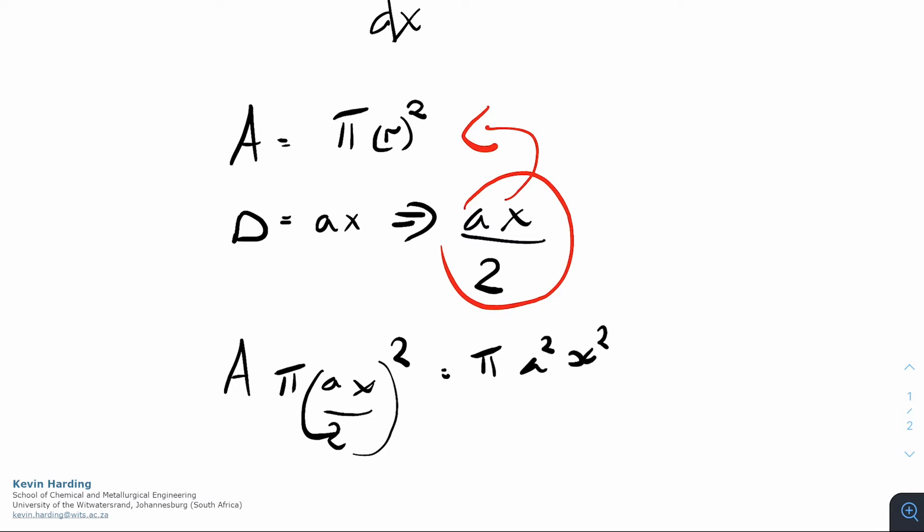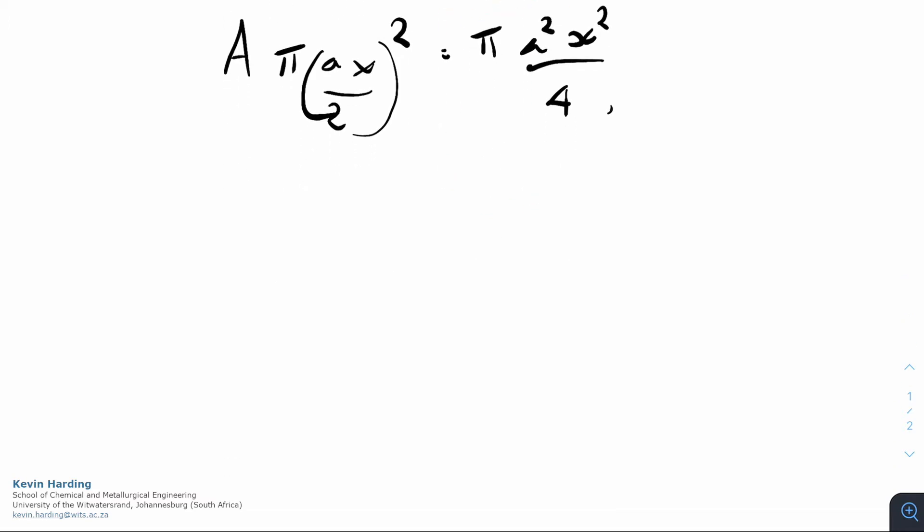If we substitute that into our q equation, we have q equals minus ka, which is now pi a squared x squared on four, dt dx. We're still in a linear direction from left to right, so we still have a dx term, but it's only the area that changes in a circular pattern, which we've already taken into account with the area equation. What we do is then rearrange and solve like we do with any other equation with a dt dx.